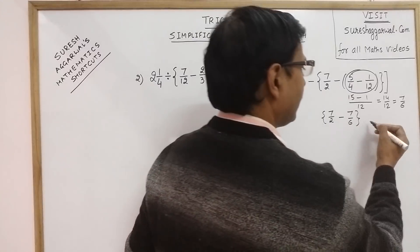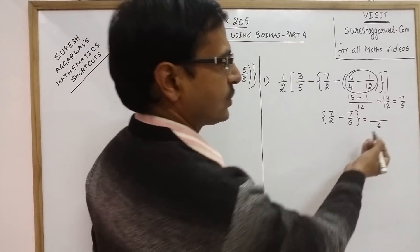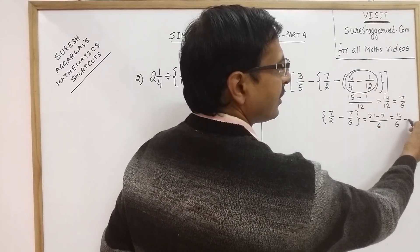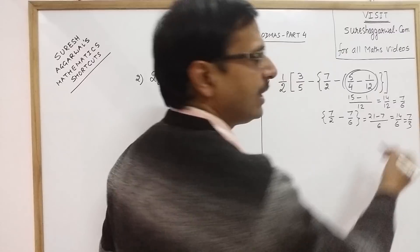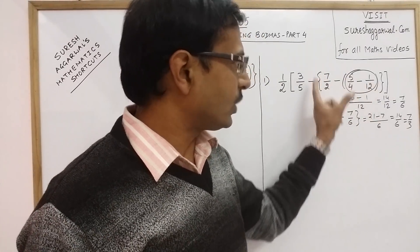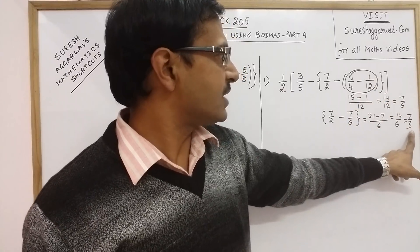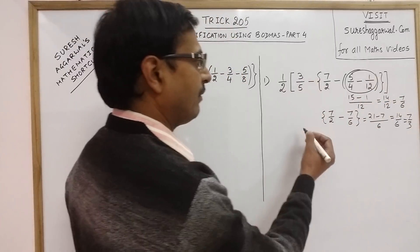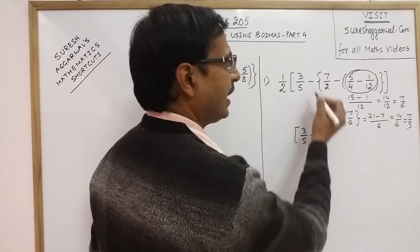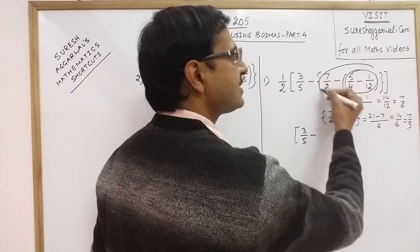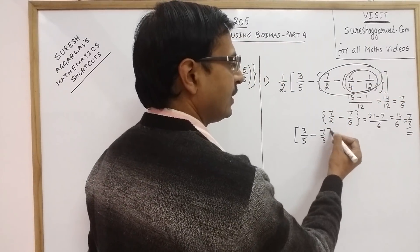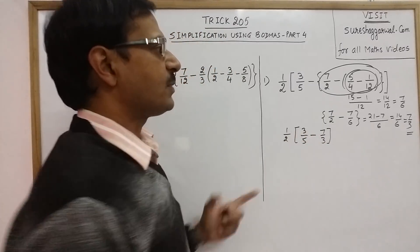Taking LCM as 6, we get 21 minus 7, that is 14/6, which simplifies to 7/3. We have now solved all three terms up to the curly brackets, and the final result is 7/3.